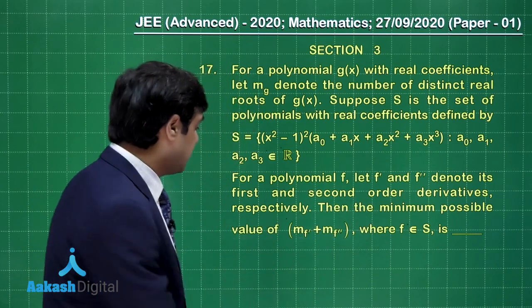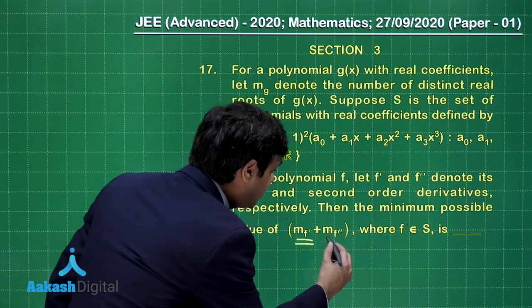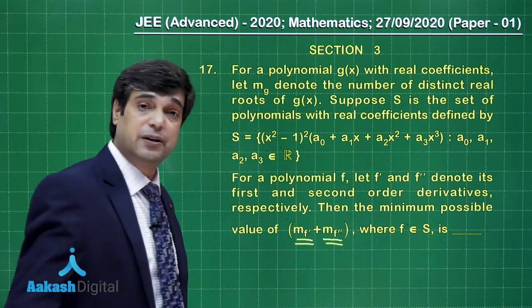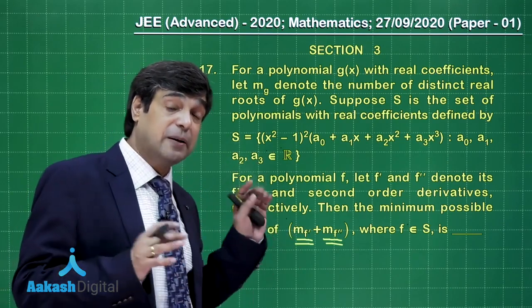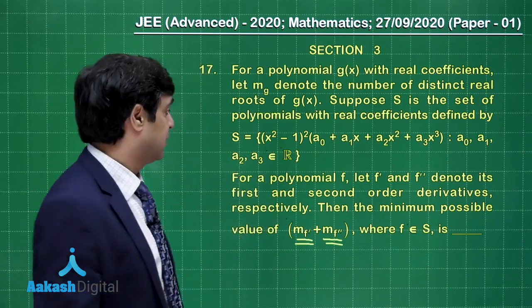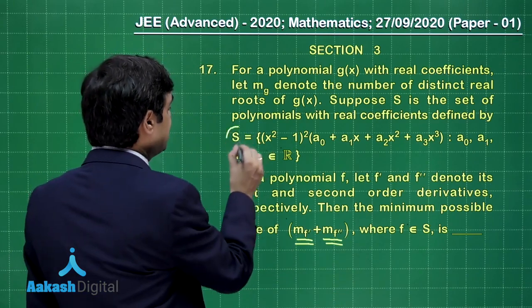For a polynomial f, f dash and f double dash meaning first and second derivative respectively, the minimum possible value of M(f dash) plus M(f double dash), that is number of roots in f dash plus number of roots in f double dash.